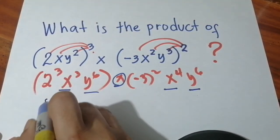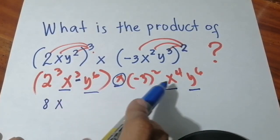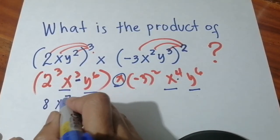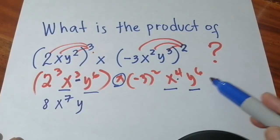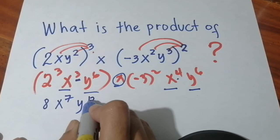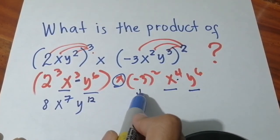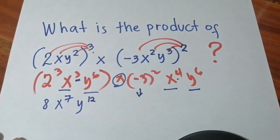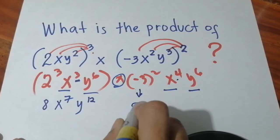So first, 2 raised to the third power is 8. Then x to the 3, and there's x to the 4 here, so that will be 7. And then y to the 6 here and y to the 6 there, so that will be 12. And then we have negative 3 here raised to the second power, so that will be 9.